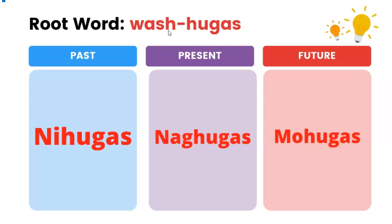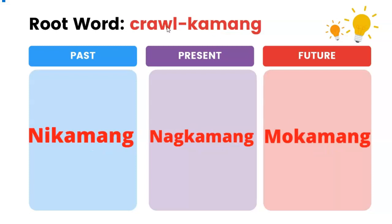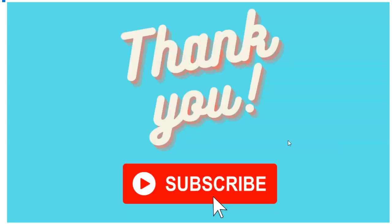Wash — hugas. Past: nihugas. Present: naghugas. Future: muhugas. Crawl — kamang. Past: nikamang. Present: nagkamang. Future: mukamang.